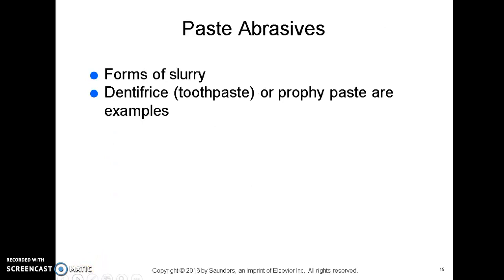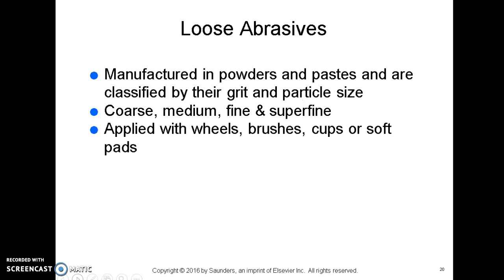Paste abrasives come in the form of a slurry — toothpaste or dentifrice are examples of paste abrasives. Loose abrasives are manufactured in powders and pastes and classified by grit and particle size: coarse, medium, fine, and superfine — coarse being the largest particles and superfine the smallest. These can be applied with wheels, brushes, cups, or soft pads onto the substrate.